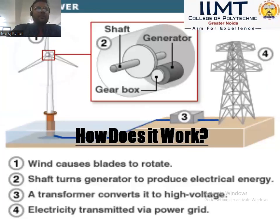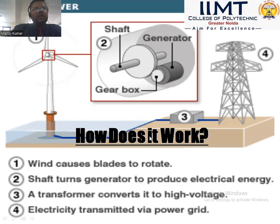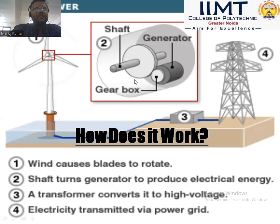The wind turbine consists of three blades, a tower, a shaft, a generator, a gearbox, and a transmission tower. How does it work? Wind causes the blades to rotate, and the shaft turns the generator to produce electrical energy. A transformer converts it into high voltage, and then electricity is transmitted by power grids. The gearbox converts kinetic energy into electrical energy via the generator.